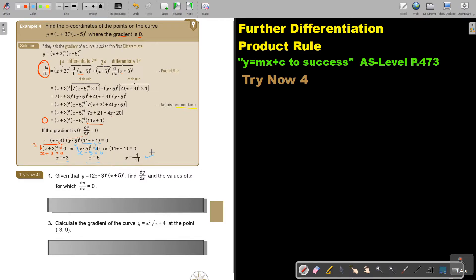I want you to stop the video, and I want you to do number 1, as well as number 3. You can continue the video as soon as you are finished. Let's stop. Number 1. Given the function, find dy over dx. They tell you to differentiate. And then, the value of x for which dy over dx is equal to 0.